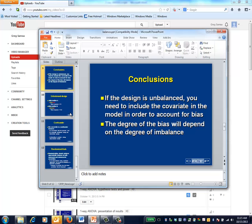In conclusion, for an unbalanced design, it's necessary to include the covariate in question in order to avoid bias. The degree of the bias depends upon the degree of imbalance, as illustrated in the next slide.